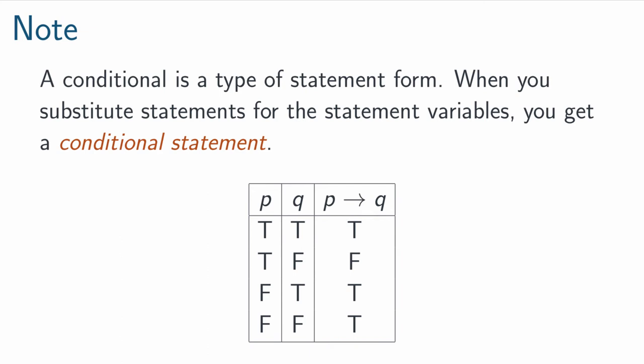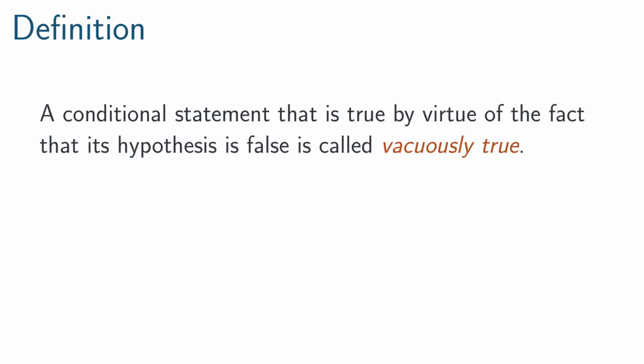Now what about those two bottom rows, where P is false? We have a term called vacuously true, also known as true by default. If a conditional statement is true just because P was false, we call it vacuously true.